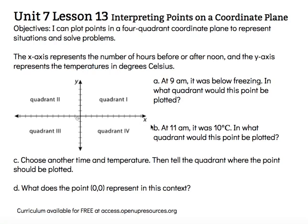The x-axis represents the number of hours before or after noon in this particular situation, and the y-axis represents the temperatures in degrees Celsius. Before I get started, I'm going to label some things. If it's before noon, I'm going to go to the left. If it's after noon, I'm going to go to the right. If it's below freezing, I'm going to go down. And if it's above freezing, I'm going to go up.